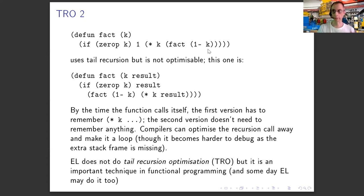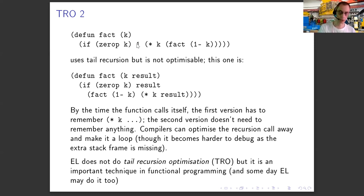In the first version, when we do the recursive bit it says `times K factorial(K minus 1)`, which means Emacs needs to remember K until it has finished calculating `factorial(K-1)`. So if you calculate the factorial of four, it remembers four while calculating factorial of three, remembers three while calculating factorial of two, and so on down to factorial of zero. Then it can unwind the stack: one times one is one, times two is two, times three is six, times four is 24.